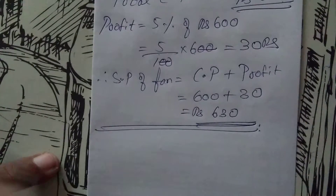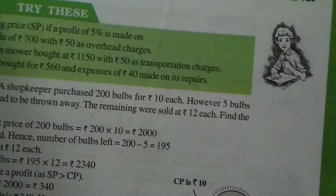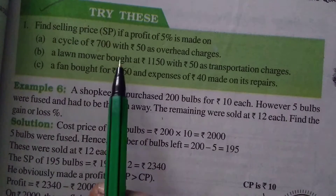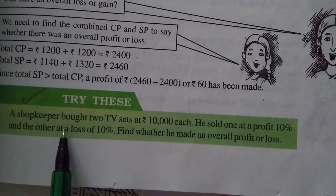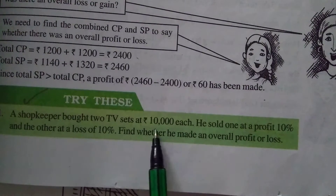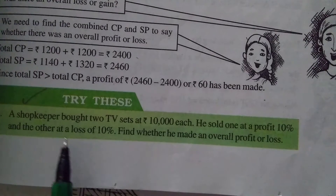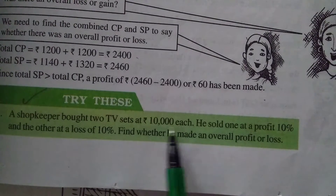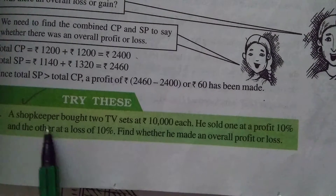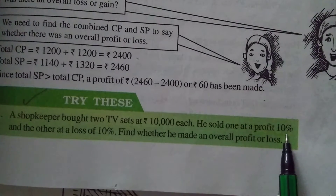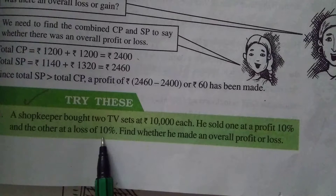We have completed page 123. At the top of page 123 there was a try-this with 3 subdivision questions, we are done. Next, in the same page at the end, we have one more try-this sum. A shopkeeper bought 2 TV sets at rupees 10,000 each. Read the question carefully: 1 TV set is rupees 10,000, so 2 TV sets is 10,000 into 2 equals rupees 20,000.